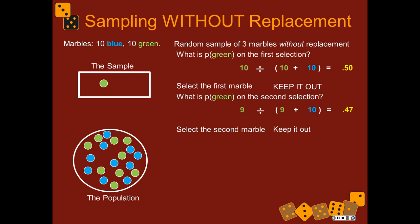We select the second marble and keep it out — it was green again. The population has changed again. What's the probability of selecting a green marble on the third try? Now there are only eight green marbles, so it's eight divided by eight plus ten, which gives us 0.44. The probabilities can go up and down depending on whether you get a green or a blue.